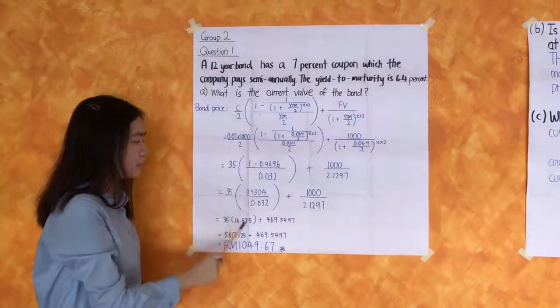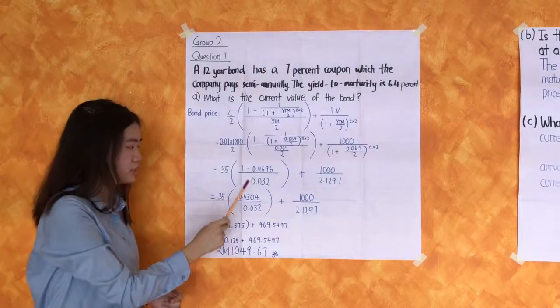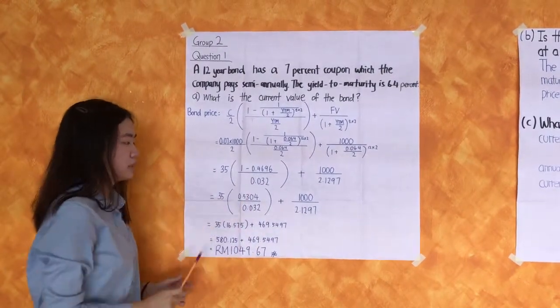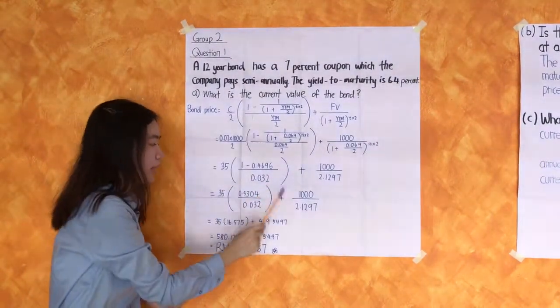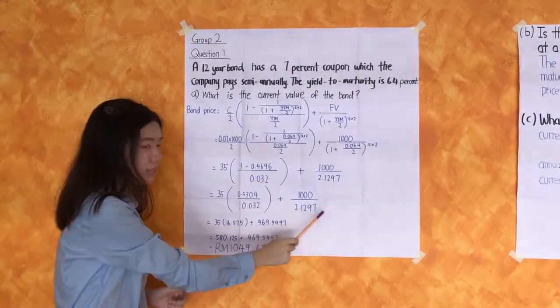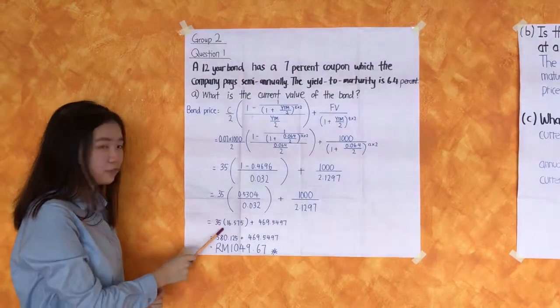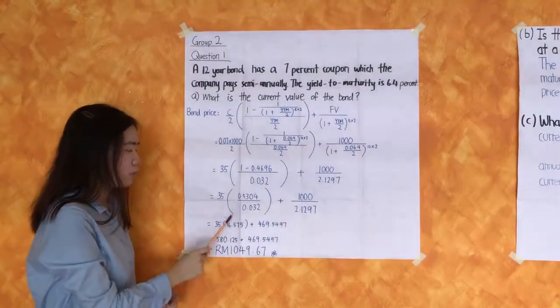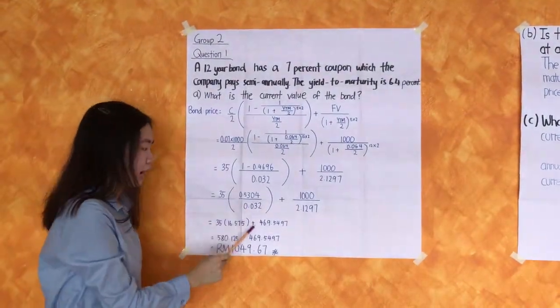Equal to 35 times 0.5304 divided by 0.032, plus FV 1000 divided by 2.1297.